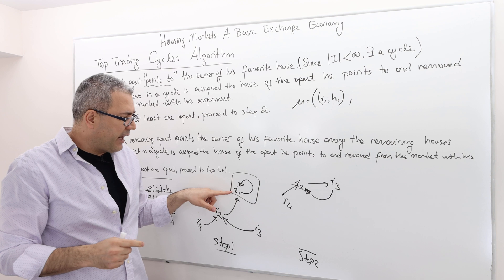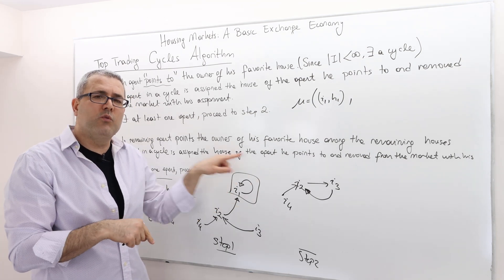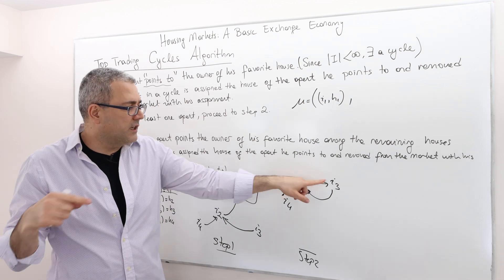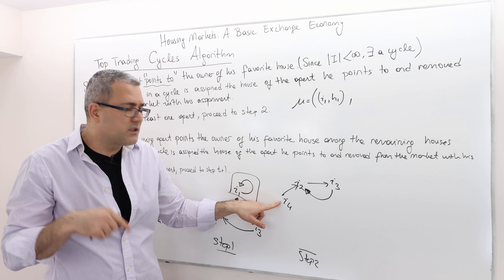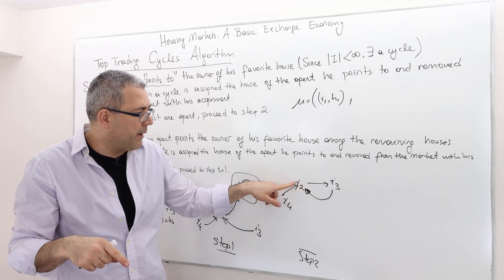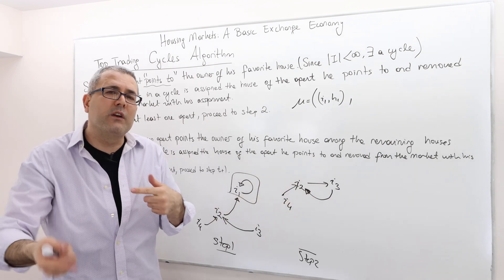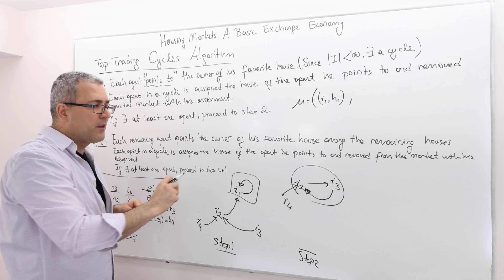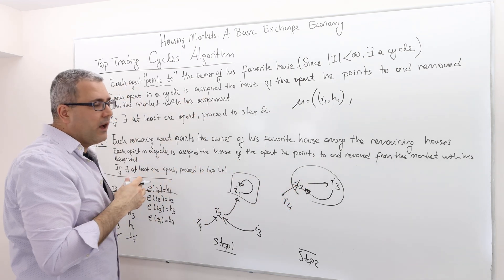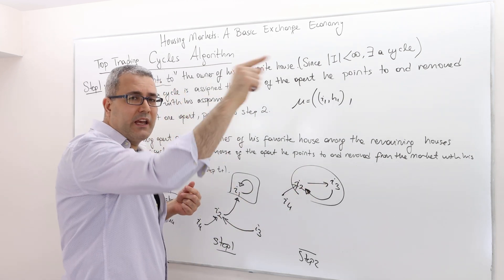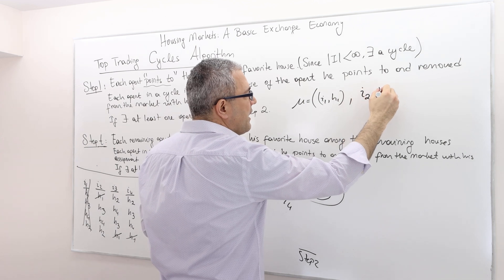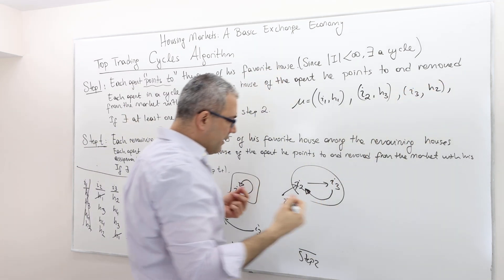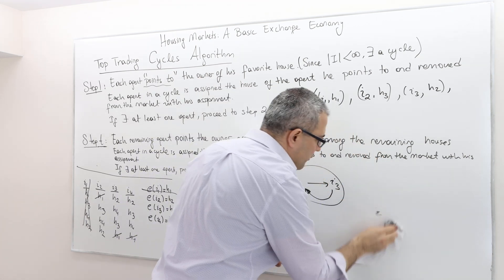Agent one was part of a cycle because once you start from agent one, you go back to agent one. Agent two is in the cycle because once you start from him, you come back to him. Same for agent three. But once you start from agent four — just follow the arrows — you never come back to agent four. So agent four is not in the cycle. Therefore, in step two, we take out the members of this cycle. Agent two was pointing to agent three's house, which is house three — so agent two gets house three. Agent three was pointing to agent two's house — so agent three gets house two.